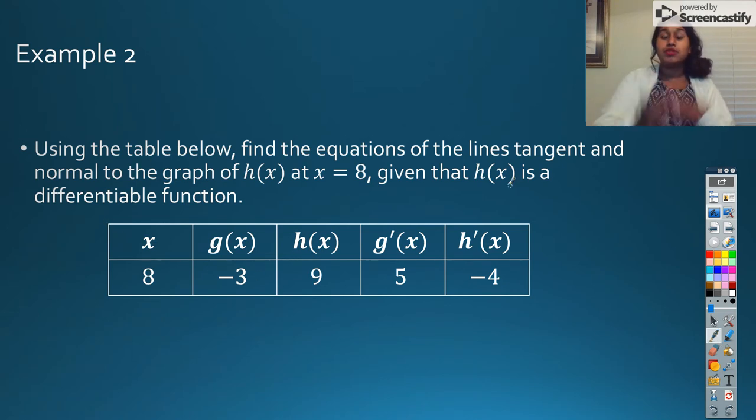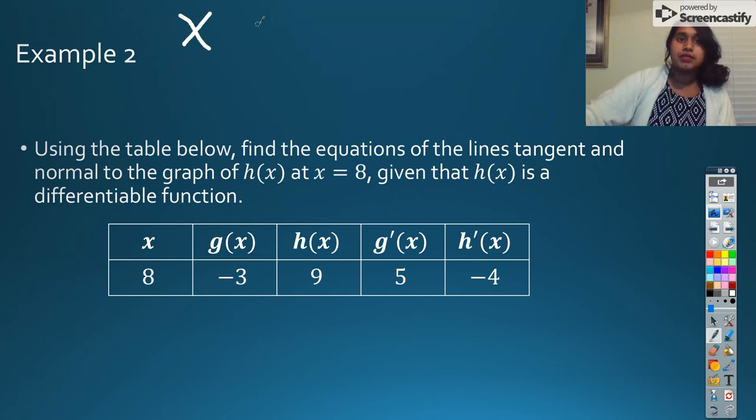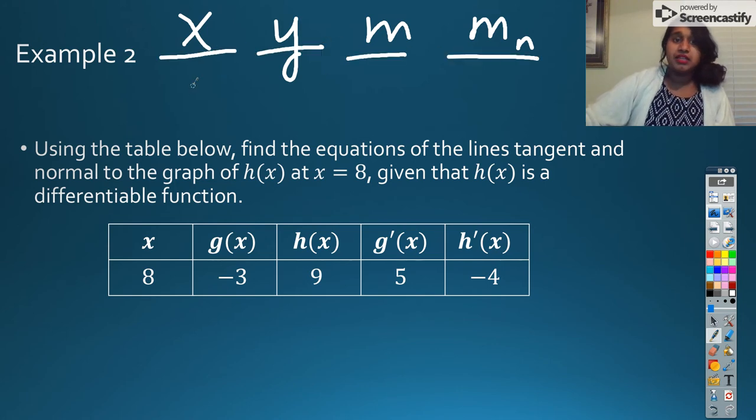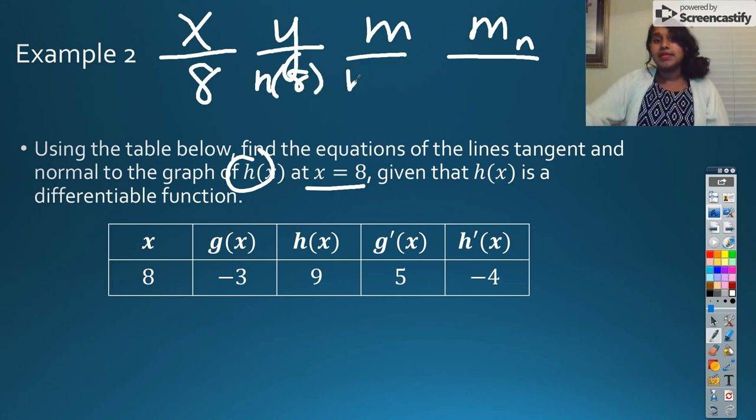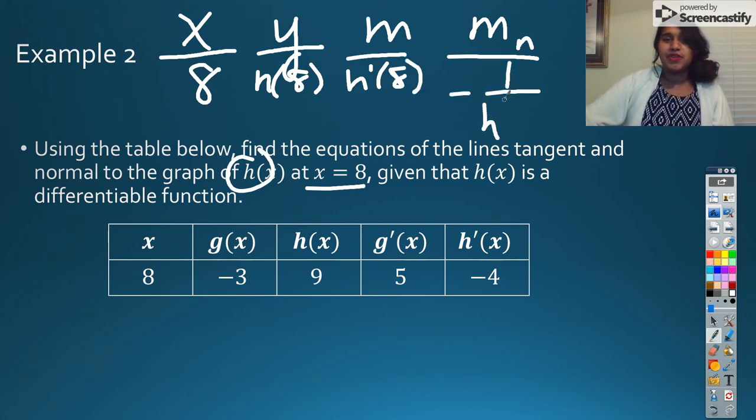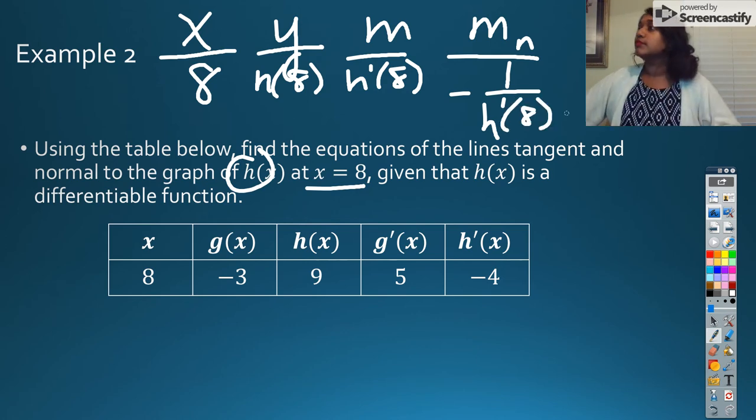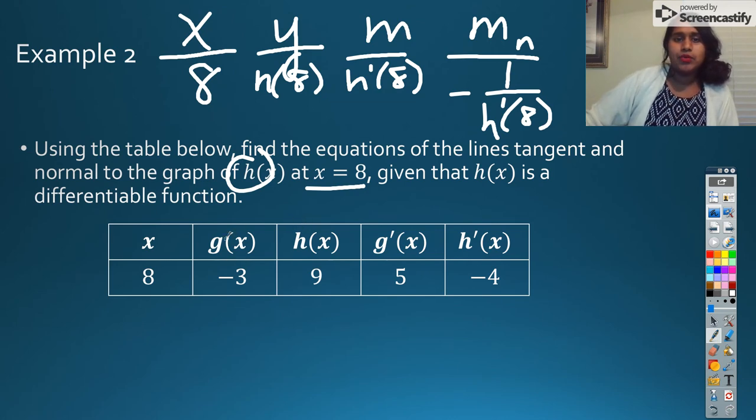So we've got example 2 using the table below. The moment we have a table or a graph, we should be so grateful that we don't have that original function to deal with, because if they've given us a table, that means they've given us half of our work already done. So the only things I really need to know are x, y, m, and my normal. So my x was given and that's 8. So that means if we're talking about h of x, my y is actually going to be h of 8. And my m, my slope, should be h prime of 8.